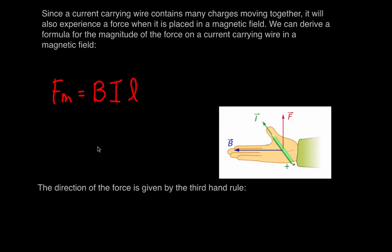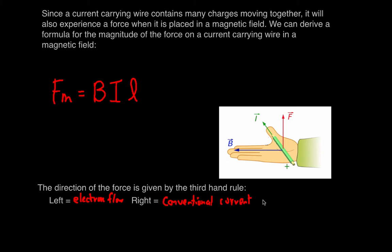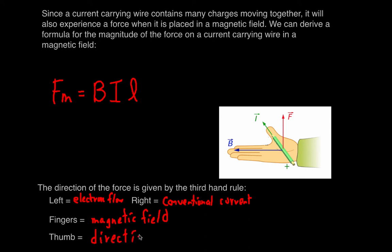The direction of the force is given by the third-hand rule. Use your left hand if you're considering electron flow from the negative terminal of a battery to the positive terminal. Use your right hand if you're considering conventional current, which flows from the positive terminal of the battery to the negative. Your fingers point in the direction of the magnetic field, your thumb points in the direction of the current, and your palm points in the direction of the force.